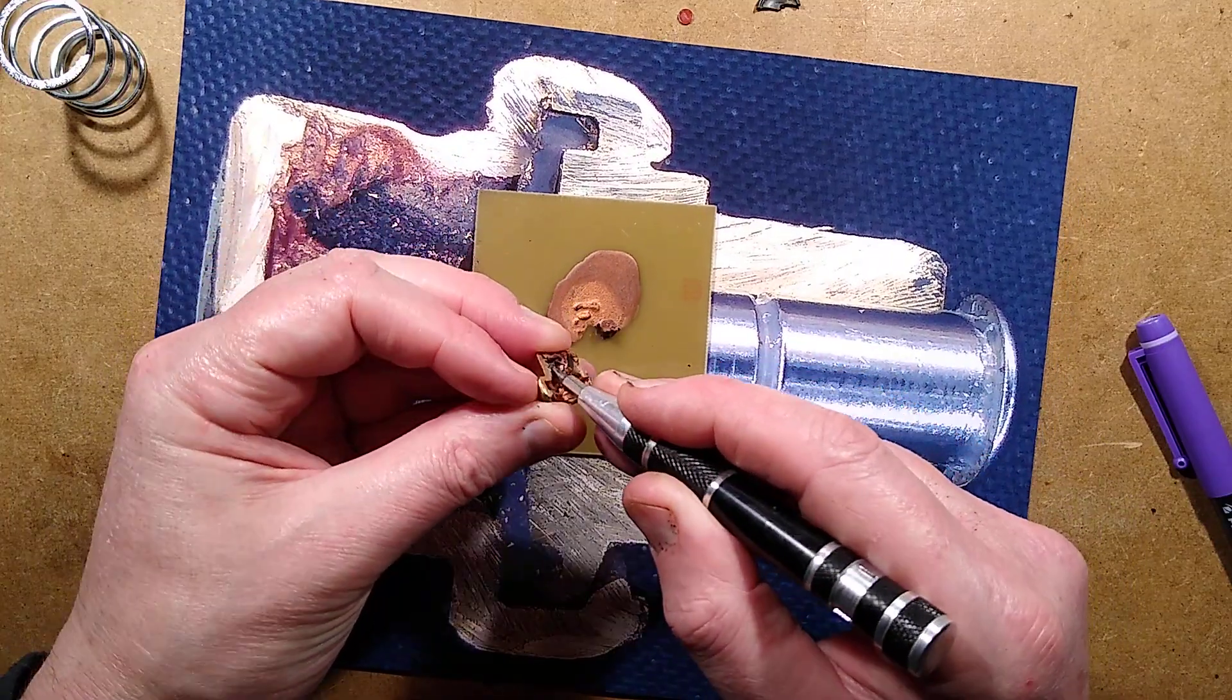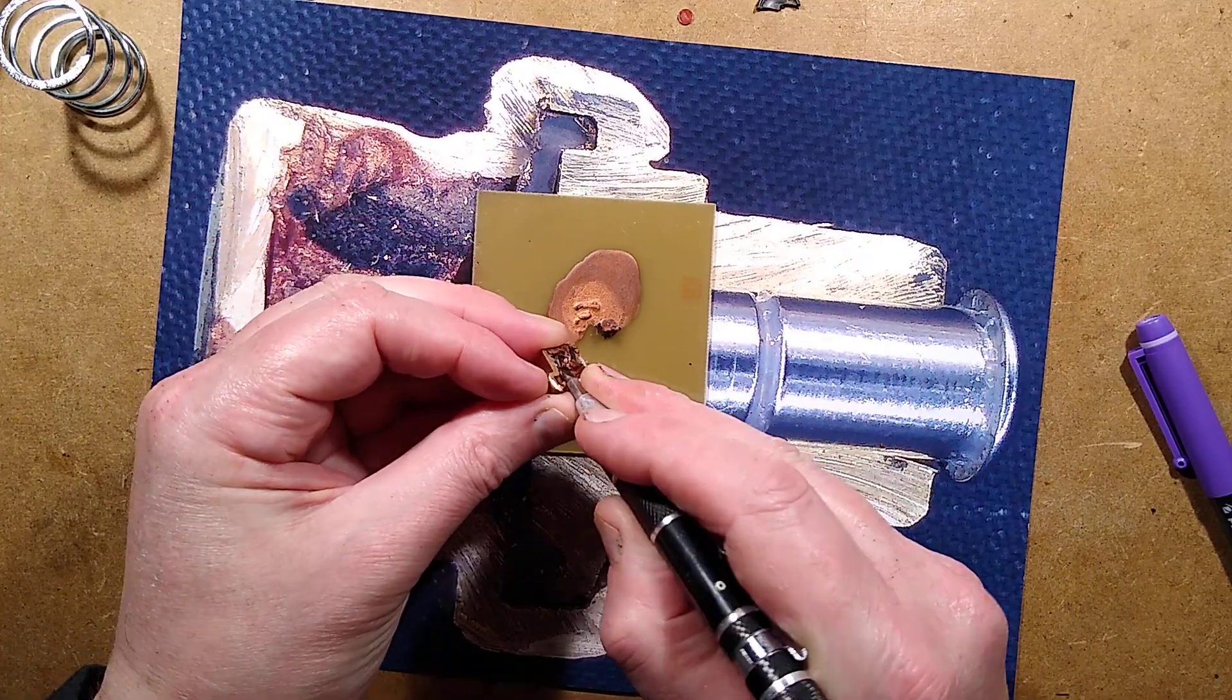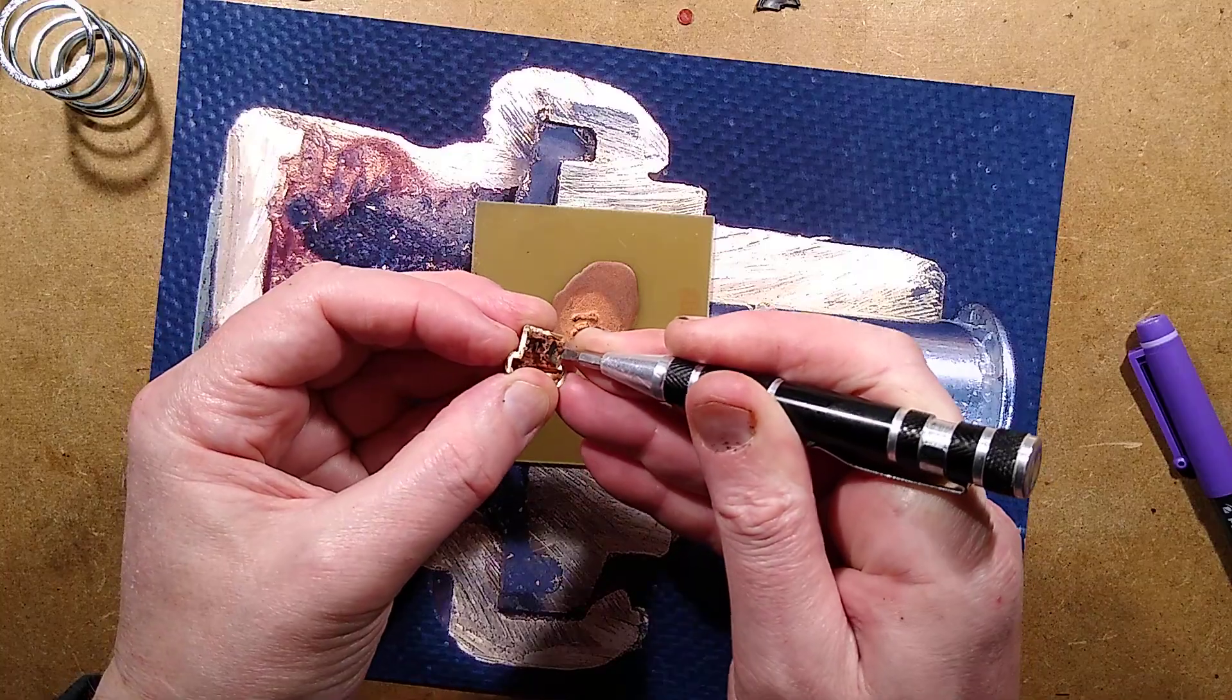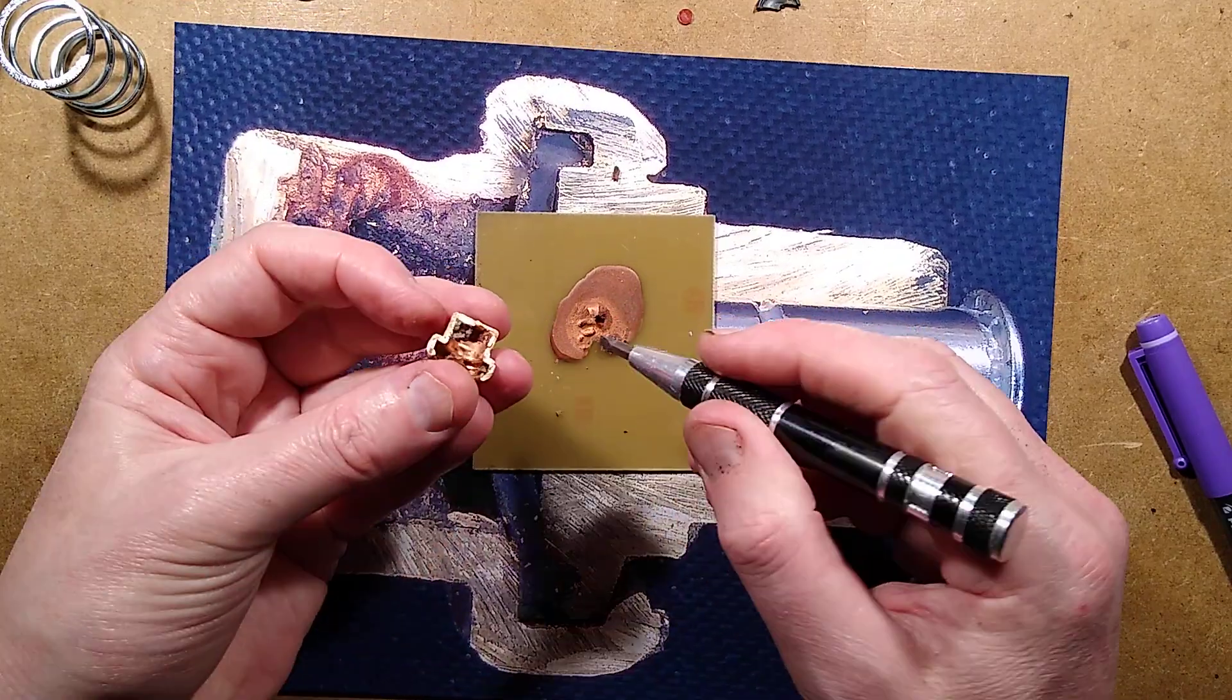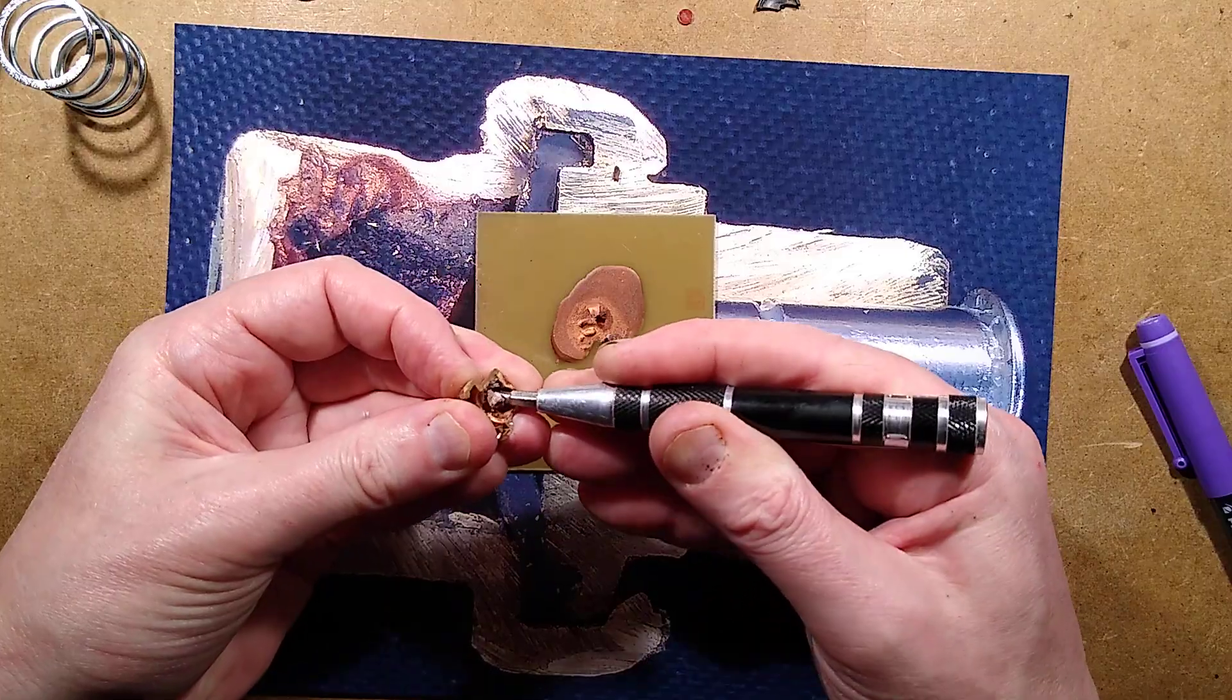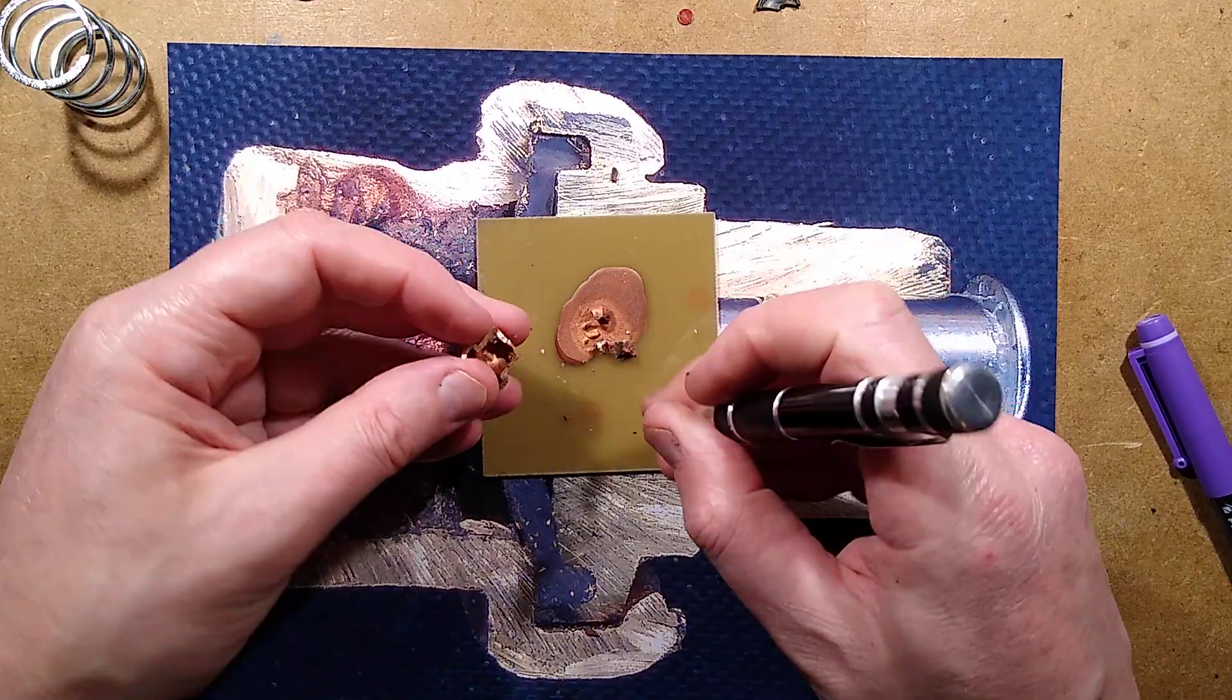And you may see the shimmeriness. I don't know if the shimmeriness will show up by the time I've zoomed in but that is very hard wax but it goes completely fluid when it's melted.